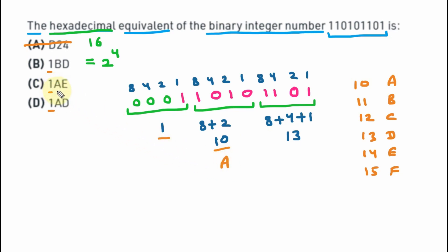So we can see that in options C and D, A is coming. But in B, A is not coming, so we are striking this option. Now, afterward, we have 13. So for 13, we have D. So we can see that D is only available in option D. So here, C is also not the option. And we have the correct answer, which is 1AD.